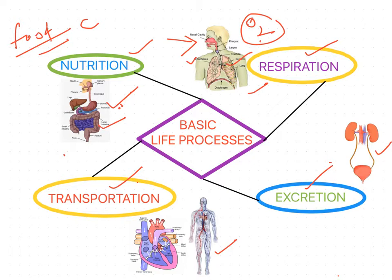So how are these four processes interrelated with each other? If any one of these processes is affected, the organism will not be alive. For example, if nutrition, respiration, and excretion are all working well, but the transportation system is not working properly, then there is no exchange of oxygen, glucose, or waste products — and the organism will not be alive.